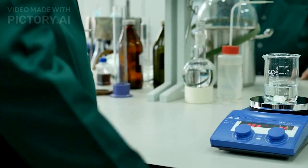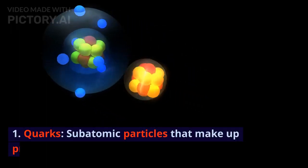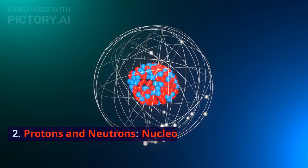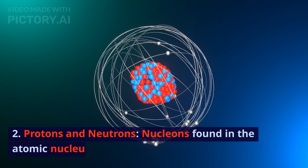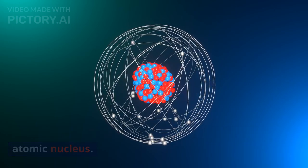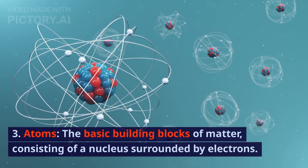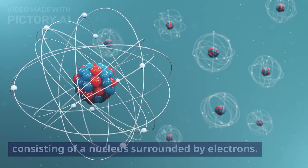Subatomic Scales: 1. Quarks - subatomic particles that make up protons and neutrons. 2. Protons and neutrons - nucleons found in the atomic nucleus. 3. Atoms - the basic building blocks of matter, consisting of a nucleus surrounded by electrons.